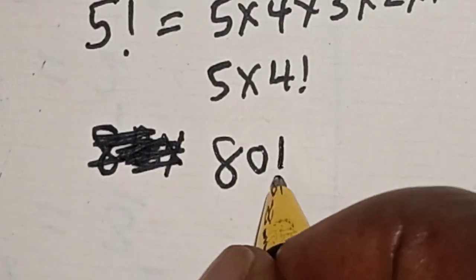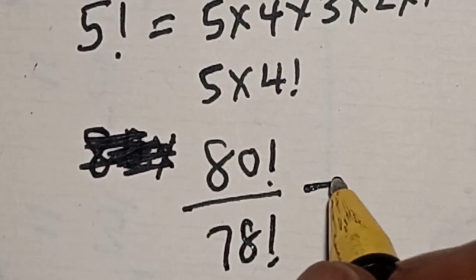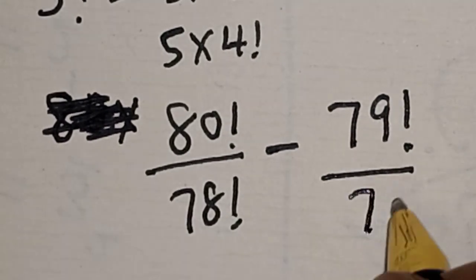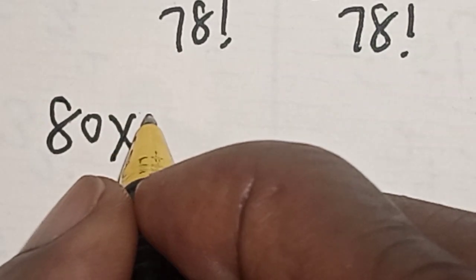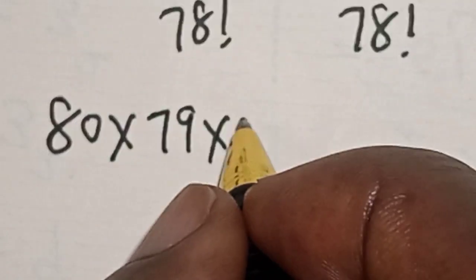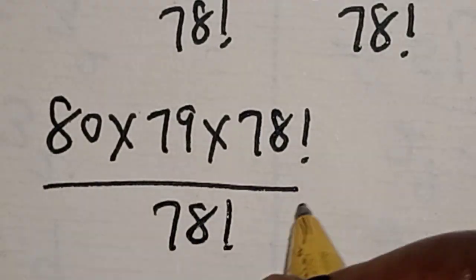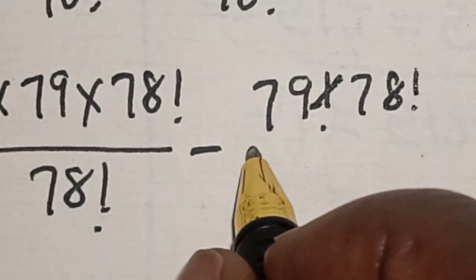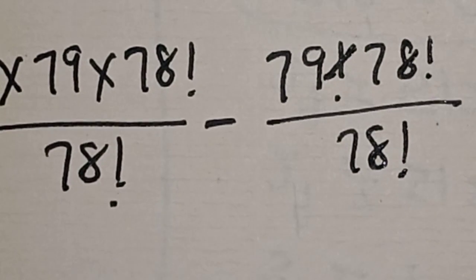80 factorial divided by 78 factorial minus 79 factorial divided by 78 factorial. This gives us 80 multiplied by 79 multiplied by 78 factorial divided by 78 factorial, minus 79 multiplied by 78 factorial over 78 factorial.